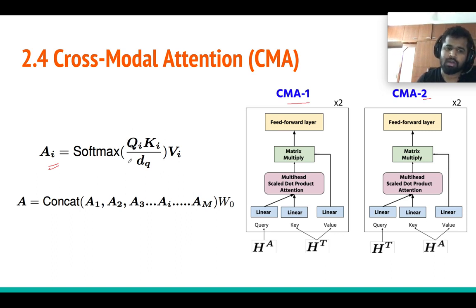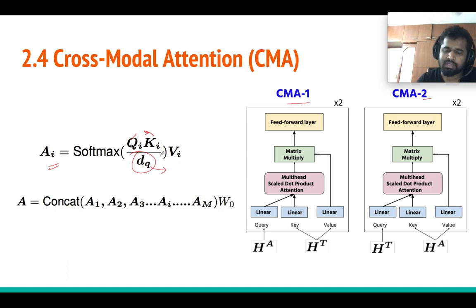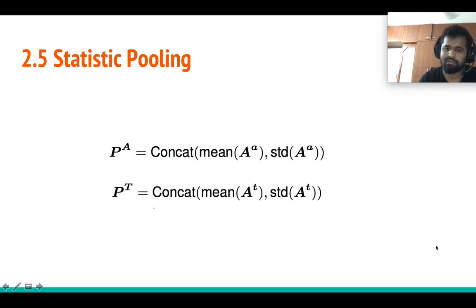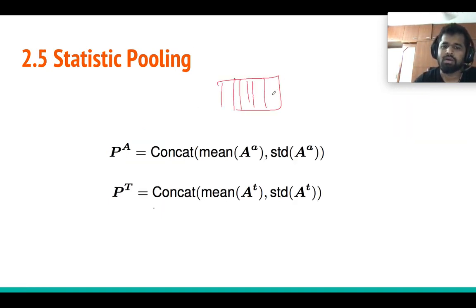This is the well-known multi-head dot-product attention. We take the query matrix, multiply it by the key matrix, divide by the square root of d_q for normalization, and then multiply by the value matrix to get the attention output. Since it is multi-head, we have multiple heads whose outputs are concatenated to get the final attention vector. CMA2 does the same but takes text features as the query and audio features as key and value. Statistic pooling simply concatenates the mean and standard deviation of all the output vectors.